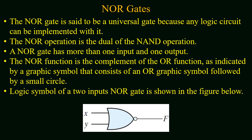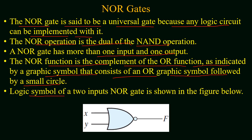The NOR gate is also a universal gate because any logic circuit can be implemented with it. The NOR operation is the dual of the NAND operation and also has more than one input but one output. The NOR function is the complement of the OR function, as indicated by a graphic symbol consisting of an OR symbol followed by a small circle or bubble. The logic symbol of the two-input NOR gate is shown in the figure.